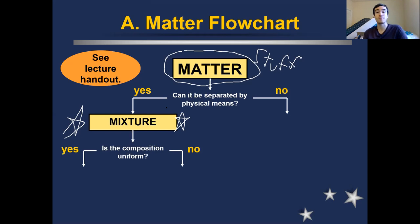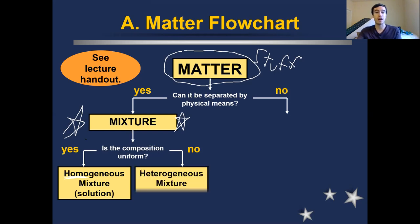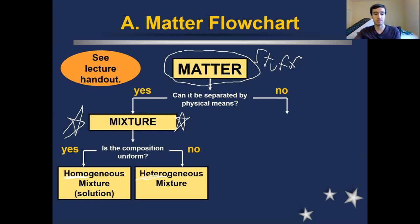There are two major ways that a mixture can break down. We can have a homogeneous mixture, meaning that everything is equal and the same — that's what the prefix 'homo' means in science. If it is not uniform and equal, if there are big pieces and small pieces or different colored pieces all mixed together, then we have a heterogeneous mixture. 'Hetero' means different, so that's what we have when there are differently sized and proportioned pieces in our matter.